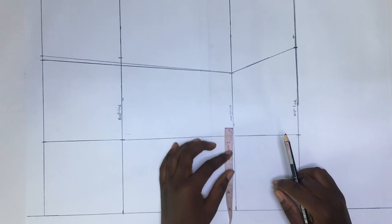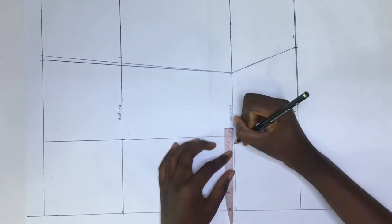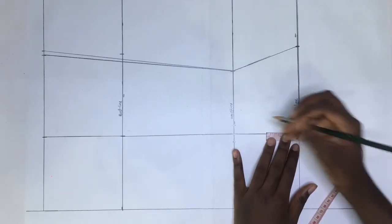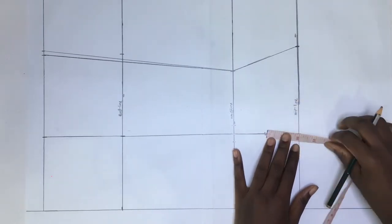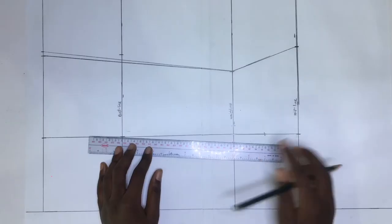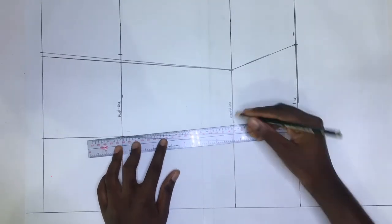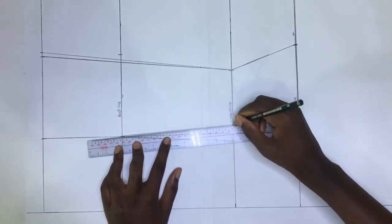On the waist line, I marked half inch on both sides, which will be our dart legs. From the hip line, I did another two inches inwards, marking it, and then I drew in the dart from the bust line to the waist line, then into the hips.